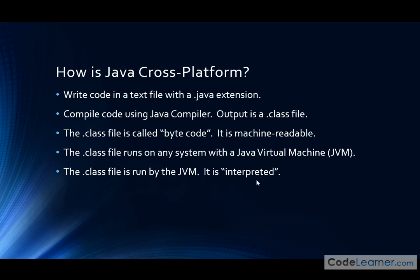So the whole process goes like this: you type your code into a .java file, you compile it using a compiler, and the output you get is a .class file. This is what the actual program is — this is what you want to run and actually execute the instructions. But you have to have a Java virtual machine in order to run Java programs. The Java virtual machine looks at the class file and goes line by line through there and executes the binary code in the class file. When we say it's interpreted, that's all we're saying — the virtual machine just goes line by line, looks at the instructions, and executes the output.